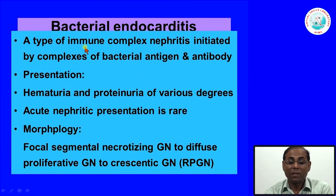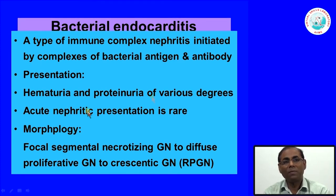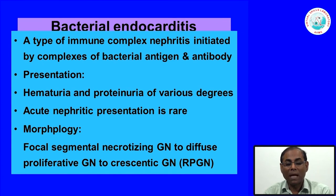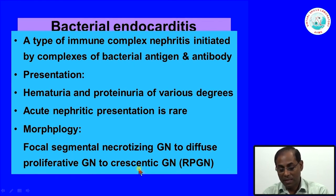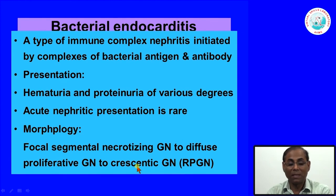Bacterial endocarditis is a slowly progressive disease with intermittent bacteremia or circulating immune complexes, causing a type of immune complex nephritis from complexes of bacterial antigen and antibody. Patients present with hematuria and proteinuria of various degrees; acute nephritic presentation is rare. On biopsy, we can see focal segmental necrotizing glomerulonephritis, diffuse proliferative glomerulonephritis, or crescentic glomerulonephritis — so morphological glomerular changes vary.